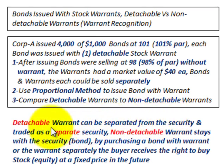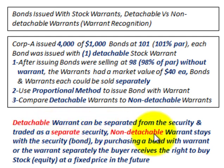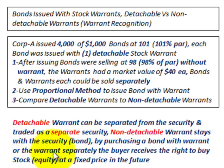A detachable warrant can be sold separately from the security and traded as a separate security. A non-detachable warrant stays with the security — in this case, the bond. By purchasing a bond with the warrant, the buyer receives the right to buy some stock equity in the company at a fixed price in the future.